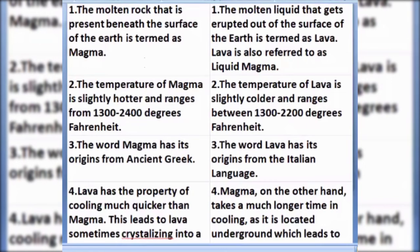These are the main differences between magma and lava. Magma is molten rock situated inside the earth, and lava is molten rock that reaches the earth's surface through a volcanic vent or by volcanic eruption.